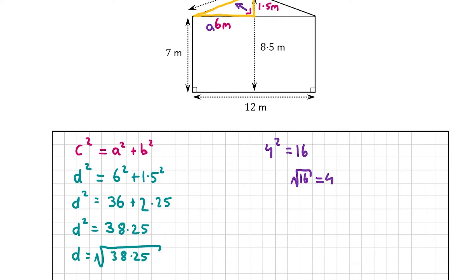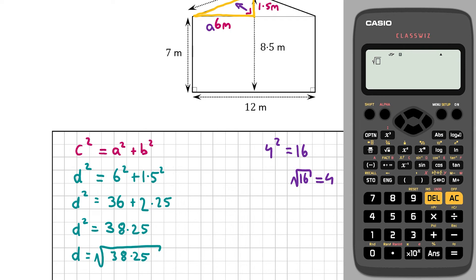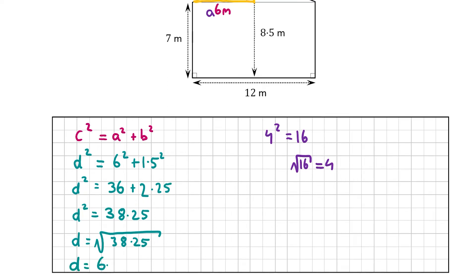So d is equal to the square root of 38.25. Using the square root button on the calculator and typing in 38.25 gives 3√17 over 2, or approximately 6.1847. Correct to one decimal place, that's 6.2 meters. So the distance d is 6.2 meters. That's our answer for part C, worth 10 marks.